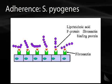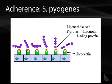This next slide shows adherence with Strep pyogenes. The F protein binds to fibronectin — also called the fibronectin binding protein. These structures on the cell membranes bind to the receptor on the tissue, helping it adhere. From there, it can set up its infection.